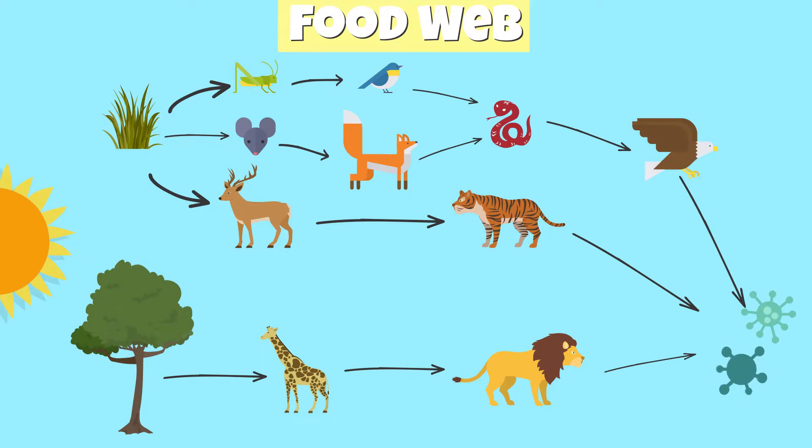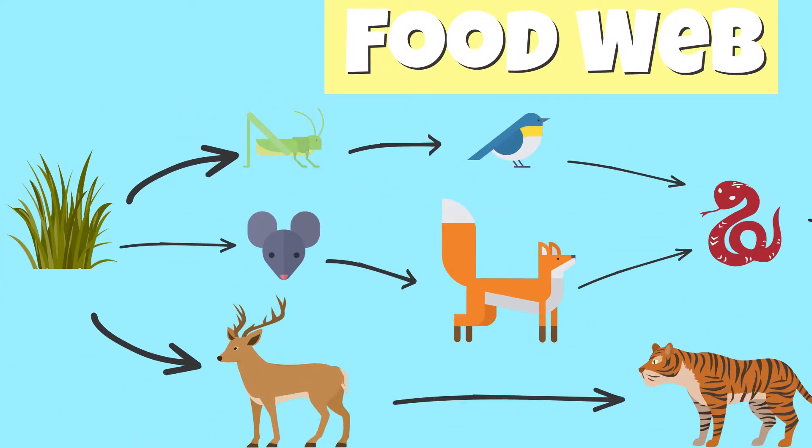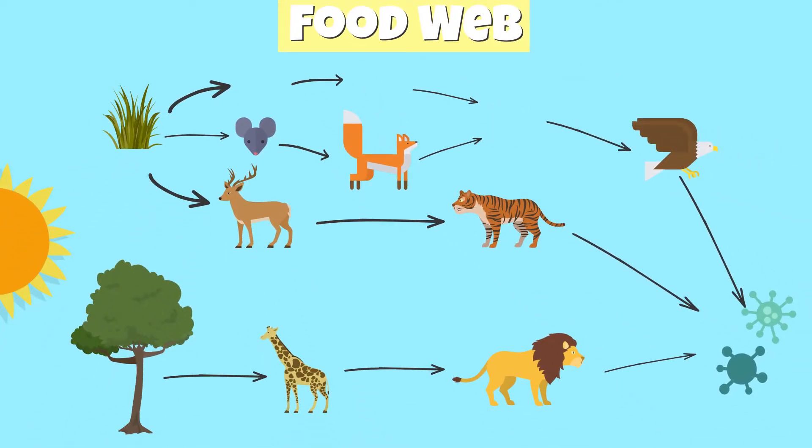Since species are connected and depend on eating other organisms to survive, the extinction of one organism can have a negative effect on other organisms. For example, if grasshoppers were to become extinct in an ecosystem, this would affect not only all species that depend on grasshoppers to survive, but all other organisms that are secondary consumers or that are interconnected.